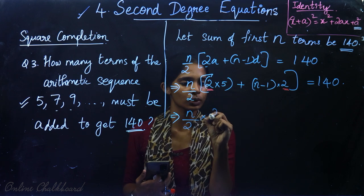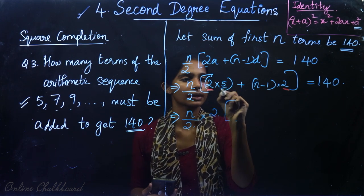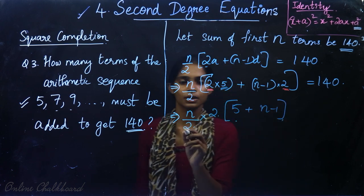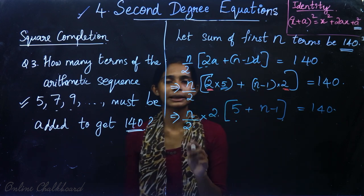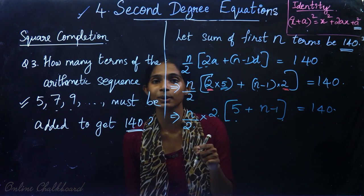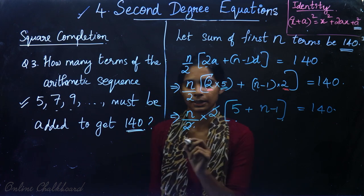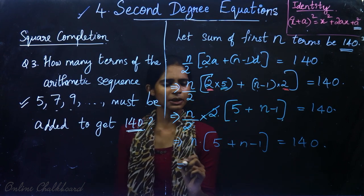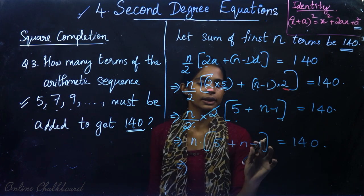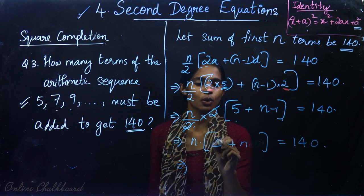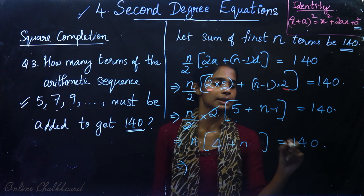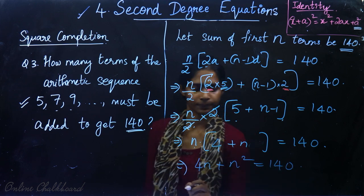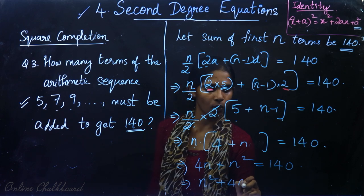Simplifying: the 2 in the numerator and denominator cancel, giving n into (5 plus n minus 1) equals 140. Expanding: n into (4 plus n) equals 140, so we get n² plus 4n equals 140.